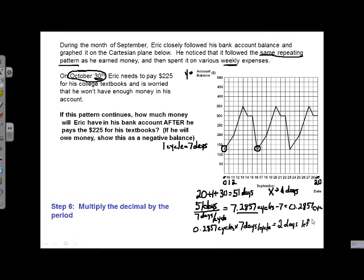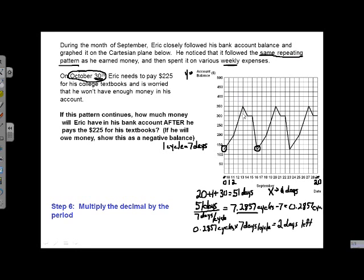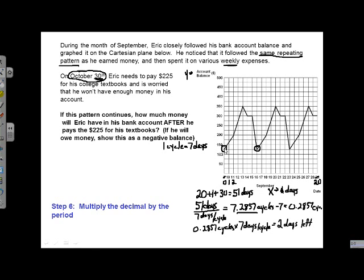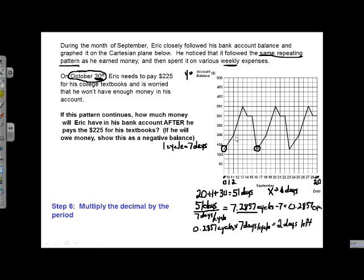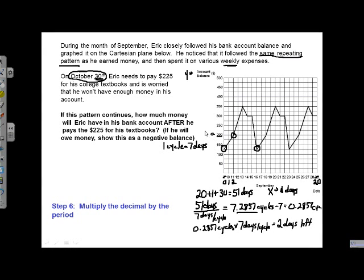So what this means is 51 days in, we'll have gone through 7 complete cycles. So 7 starting and ending right at the exact same spot. So after 49 days, we're going to be right here. And then for 51 days, we're going to be another 2 days in. 1, 2. So it's going to put us right here. And we can see at that point, you'd have $200 in the bank.